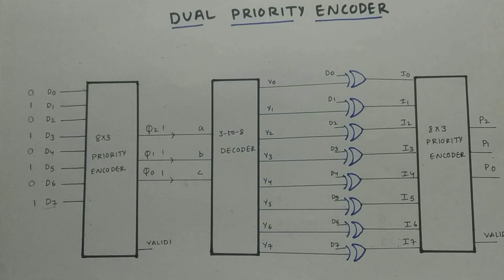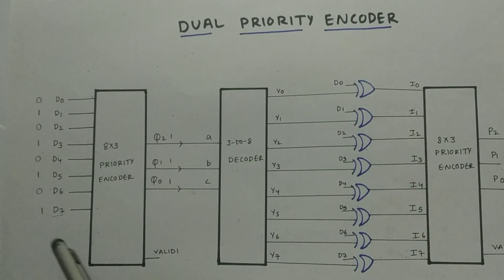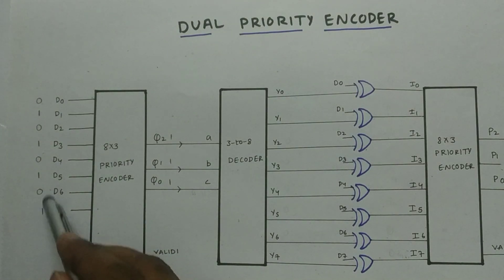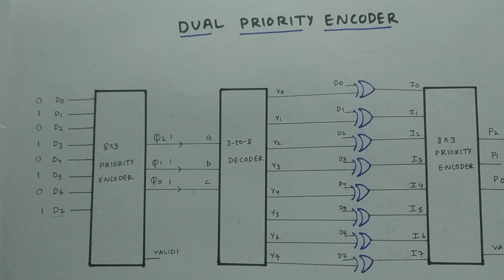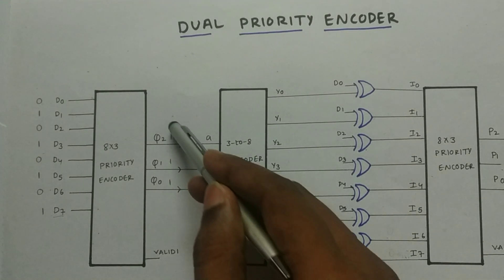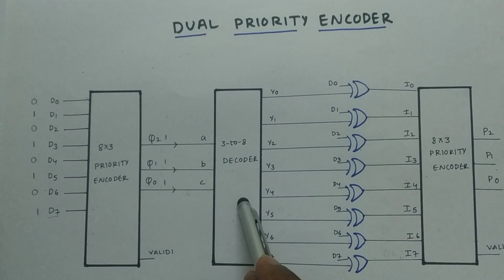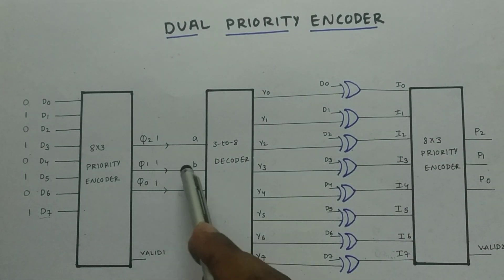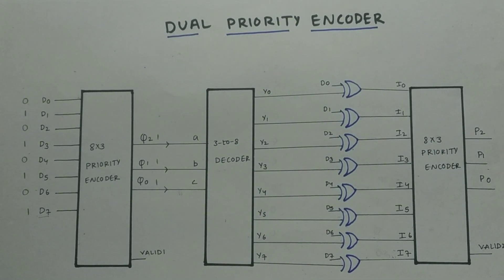So we got the value 1, 1, and 1 — this will be passed on to a decoder. Now we know which bit has the highest priority. If D7 were not there, the next highest bit which is high would get the encoded value — that is 1, 0, 1 in this case. Now we've got the highest priority value; we need to shut that bit down and pass it to an encoder, meaning we need to make this value 0.